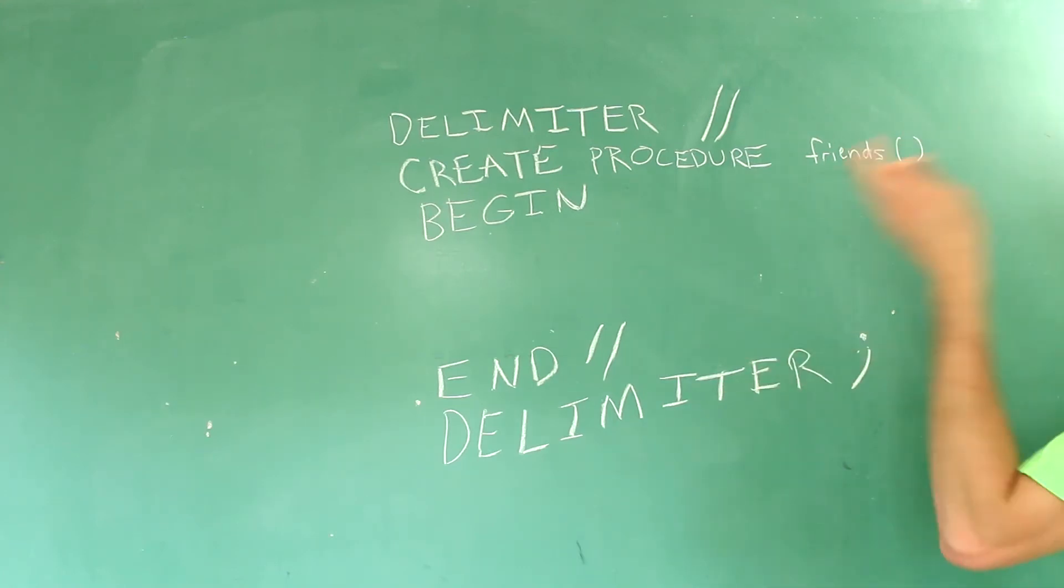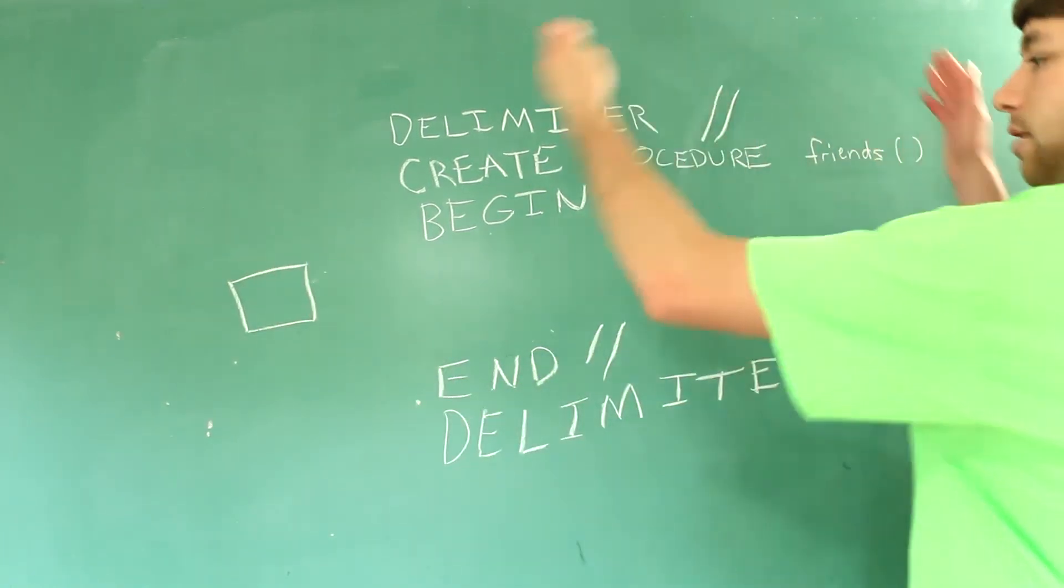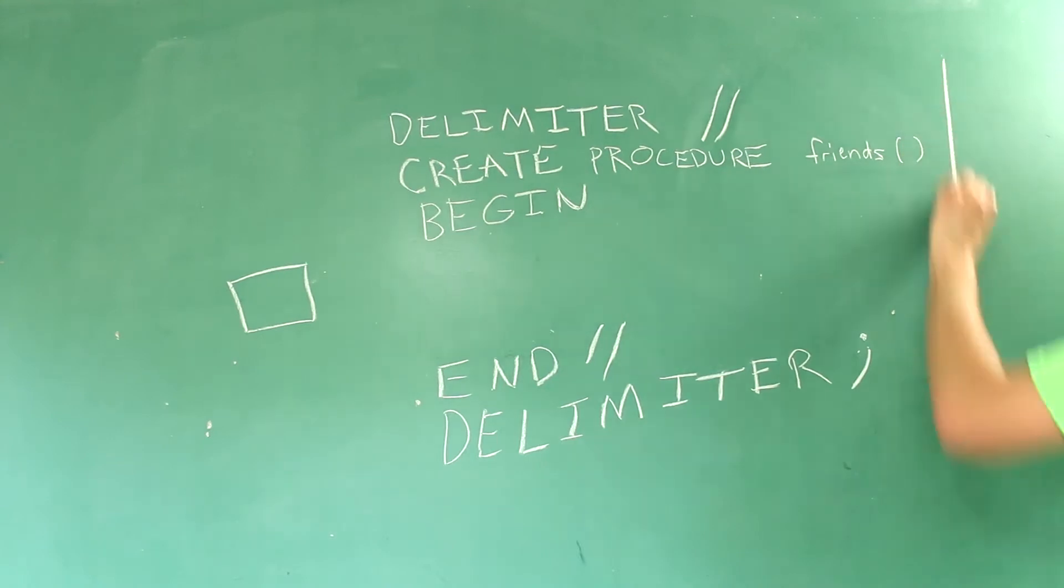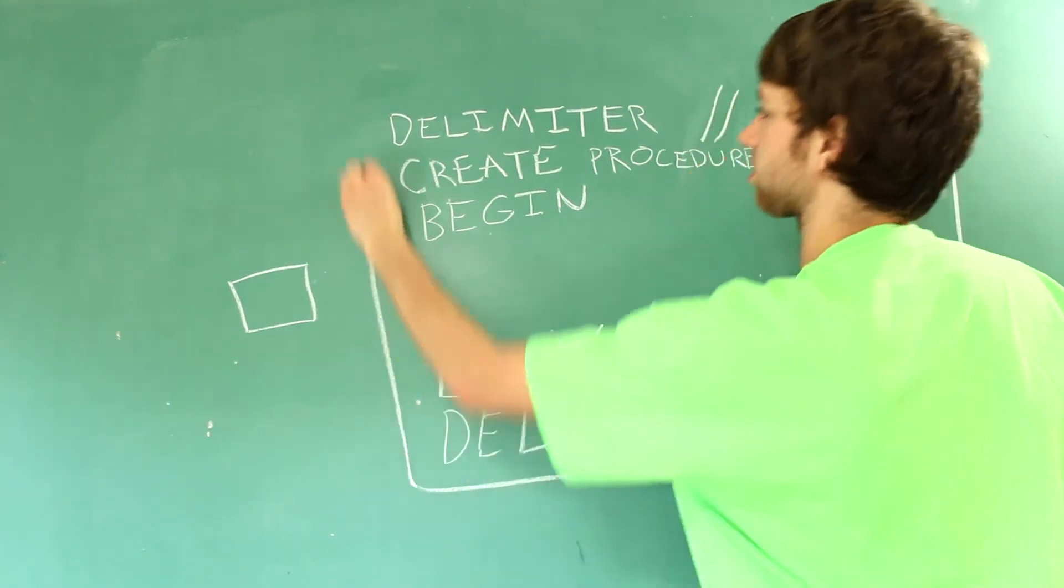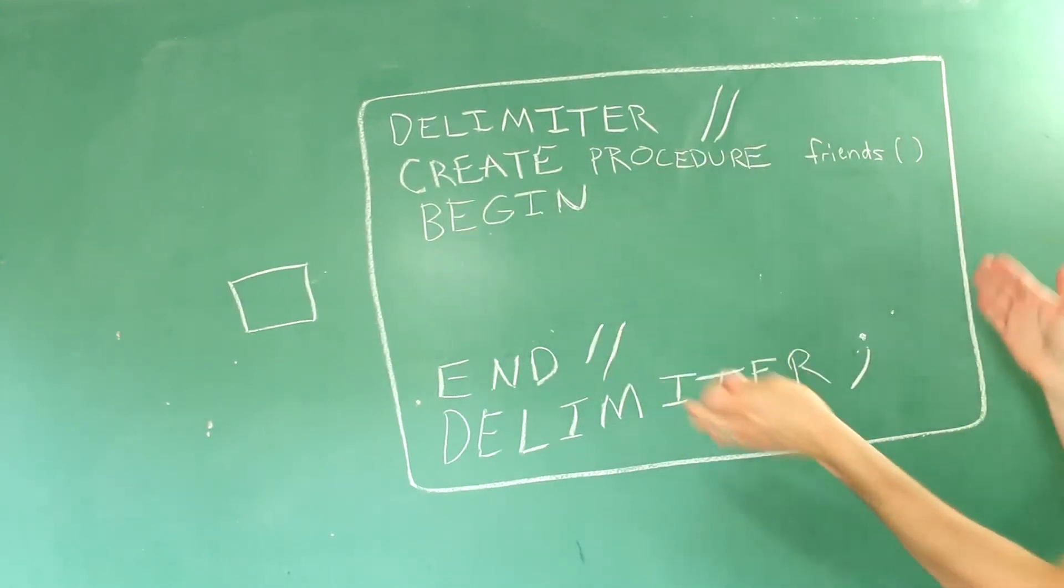You just made a sweet procedure that does absolutely nothing. But this is the shell of what your procedure is going to be. Earlier when I drew that box that represented a procedure, that was this. So think of this as a giant box and now we are exploring the innards of this box object thing.